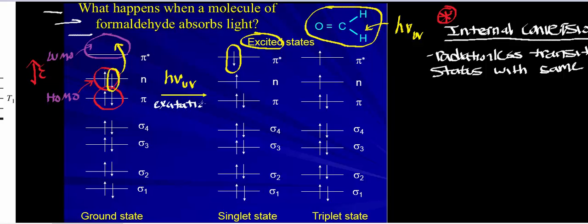This process of exciting that electron from the HOMO into the LUMO is called excitation. Whenever we expose this molecule to light and excite that electron into the higher energy state, it's termed an excited state. Now, between the singlet state and the triplet state, notice that this excited electron — I'll do this one in green — they have different spin quantum numbers. In the singlet state, the electron that was excited has the same spin quantum number as when it was in the ground state, and the way you typically denote these is with an S and then some number.